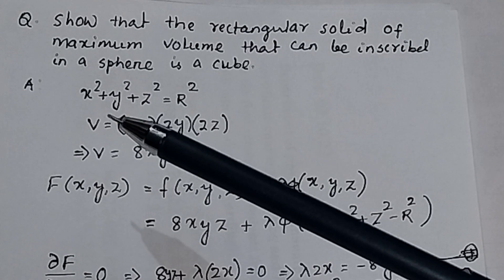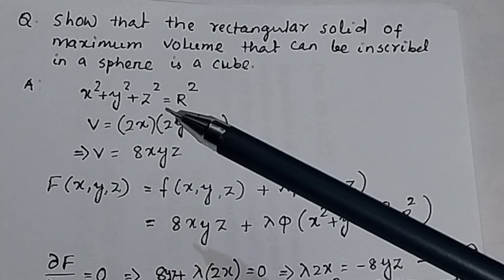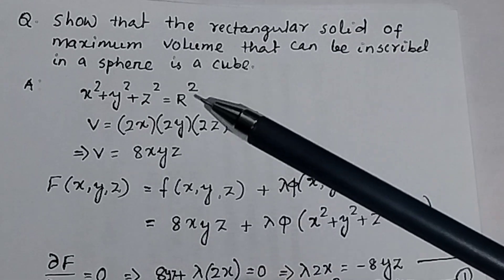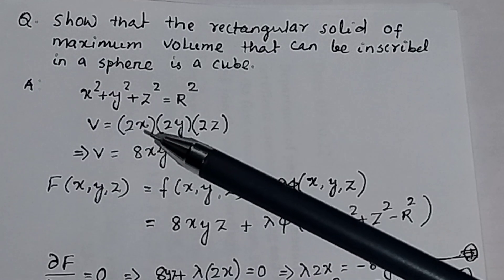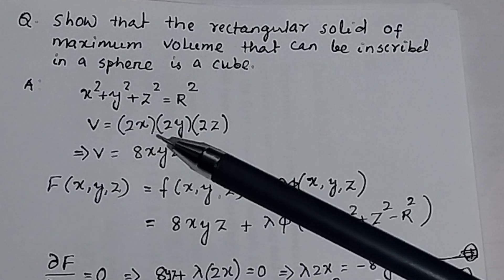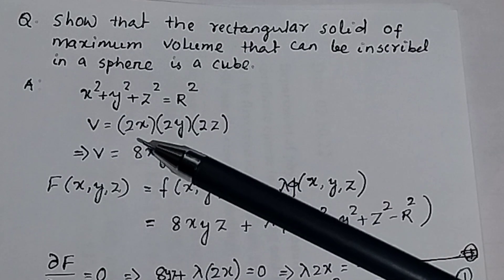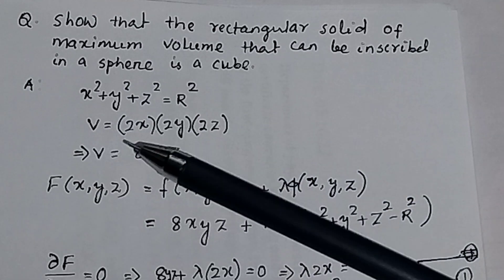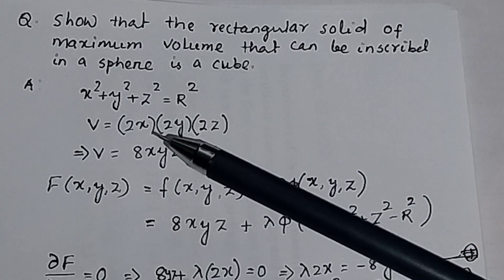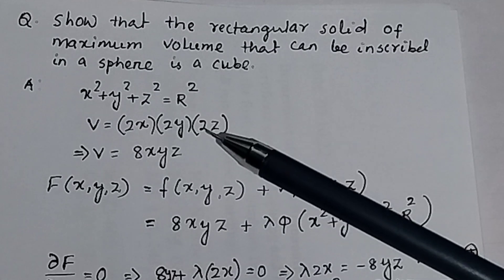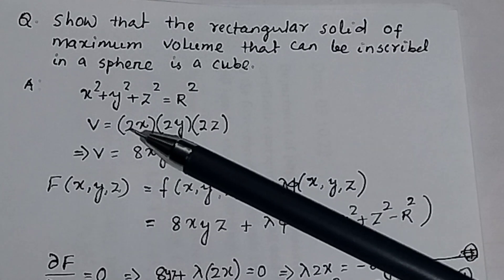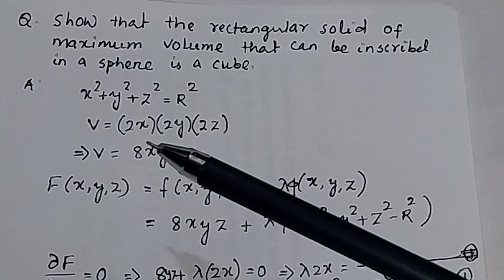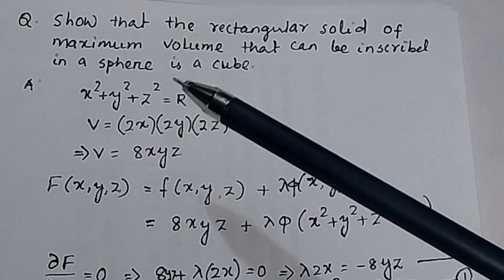So this is the constraint or condition given. You have a volume element V = length × breadth × height. Here, if you take the origin and on both sides of the origin you have x, then the total length along x is 2x, similarly 2y along y and 2z along z. So the volume will be equal to 2x × 2y × 2z. This is the objective function — the object inside the sphere.